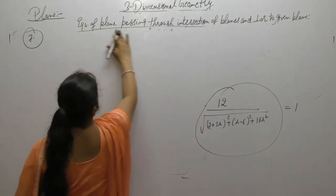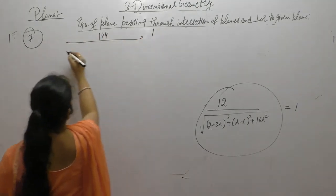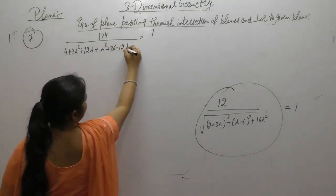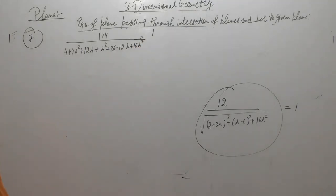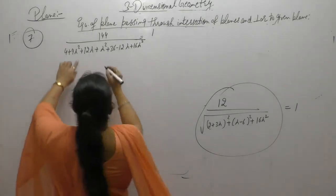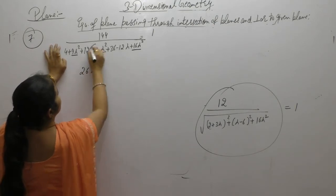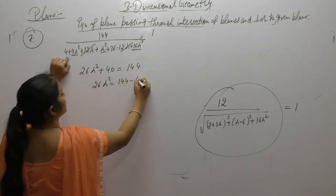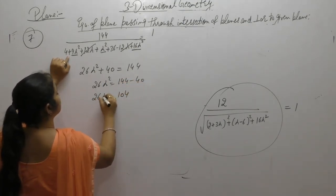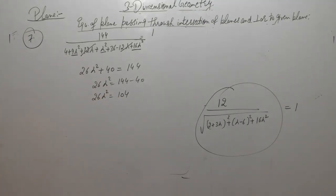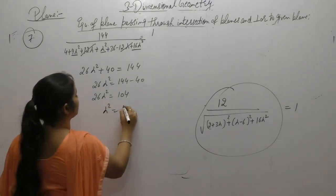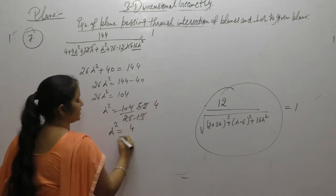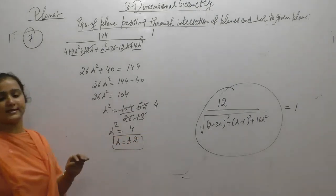Squaring both sides: 144 = (2 + 3λ)² + (λ − 6)² + 16λ². Expanding: (4 + 12λ + 9λ²) + (λ² − 12λ + 36) + 16λ² = 144. The 12λ terms cancel: 9λ² + λ² + 16λ² + 4 + 36 = 144, giving 26λ² + 40 = 144, so 26λ² = 104, and λ² = 4. Therefore λ = ±2.